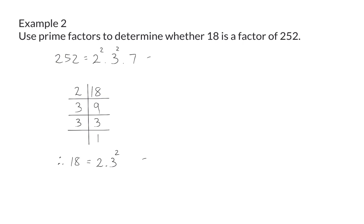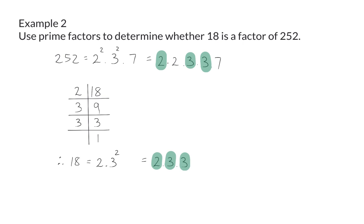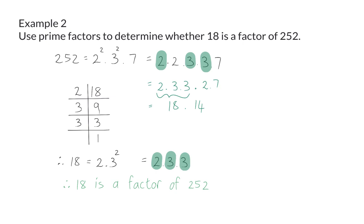Let's compare these two sets of prime factors. To form 18, we need a 2 that is available in 252, and we need two 3s that are also available in 252. If we now take these three numbers, we know that 2 times 3 times 3 will give us 18. And then the values that are left — which is 2 times 7 — will form our second factor, which is 14. Therefore, 252 is the same as 18 times 14 without a remainder, and that means that 18 is a factor of 252.